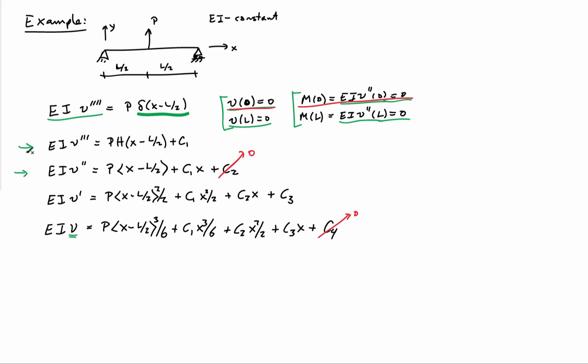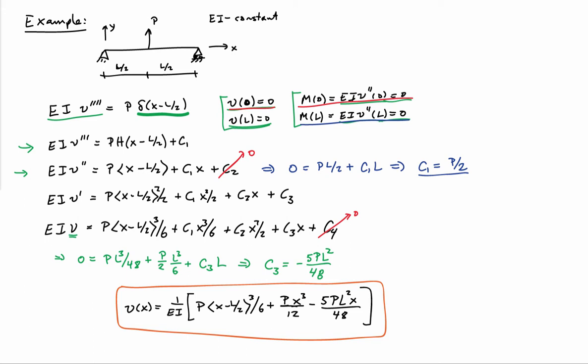So let's go ahead and apply the boundary conditions at x equals L. If I go ahead and do that, I'm going to find out that c1 is equal to 0 by noting that at x equals L, I have no moment.